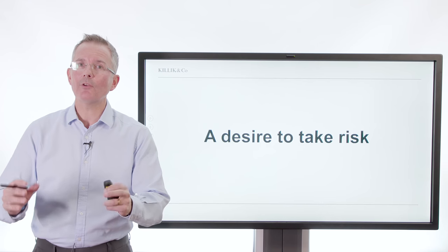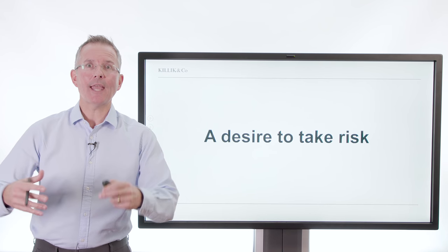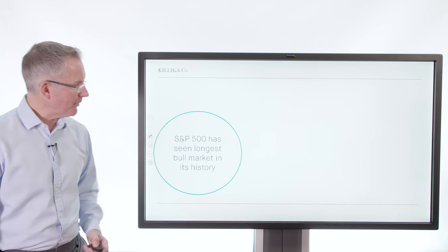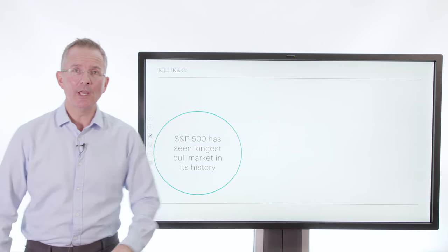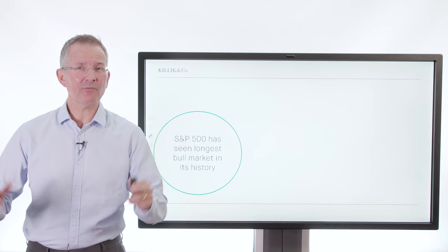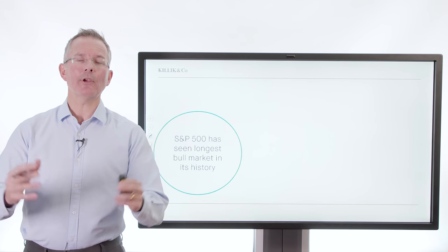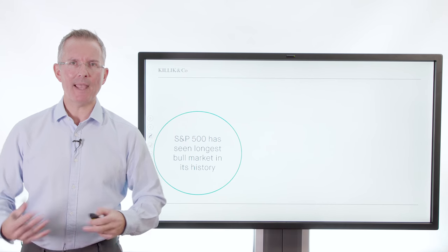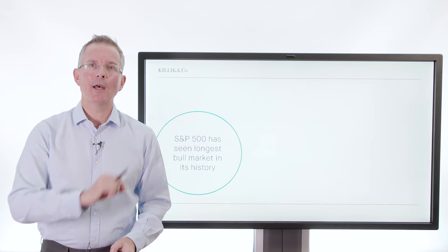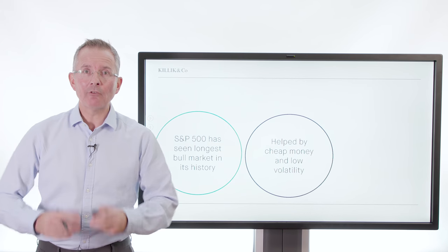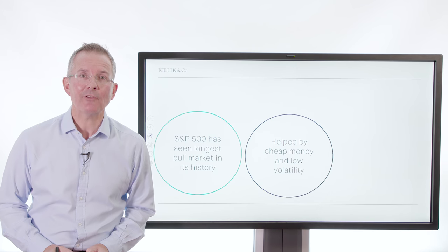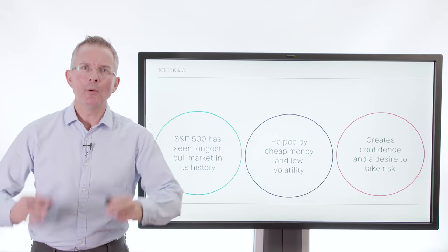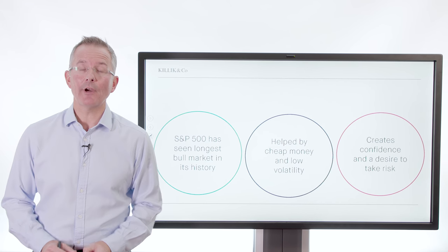Ingredient three: a desire to take risk. You need people to be thinking — as John Maynard Keynes warned — "I want a bit of excitement, a bit of tail risk. Conventional investing is dull." The S&P 500 has seen its longest bull market in history, so people have ridden a wave of rising stock markets and it's not too difficult to make money when everything is rising. As Warren Buffett said, you only find out you're swimming naked when the tide goes out — and it hasn't gone out yet. That gives people a sense of confidence and expertise, which potentially plays into the hands of people promoting investment bubbles. This is helped by cheap money, low volatility, and plenty of liquidity — cheap sources of finance that make people comfortable putting money to work, wisely or otherwise.